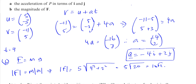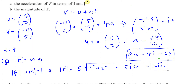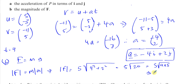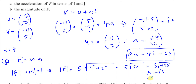Let me just make sure. You have 5 times the square root of 4 squared plus 2 squared, which gives you 10 root 5 — not 10 root 2, that was a silly mistake. Because root 20 is the square root of 4 times 5, which is 2 root 5, so 5 times 2 root 5 is 10 root 5. So 10 root 5, which to 3 significant figures is 22.4 Newtons.